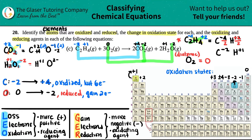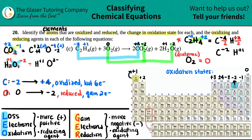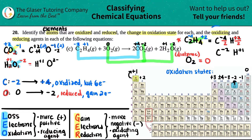So that answers the first part: carbon was oxidized and oxygen was reduced. The change in oxidation state for carbon was from negative two to positive four, and for oxygen it was from zero to negative two.